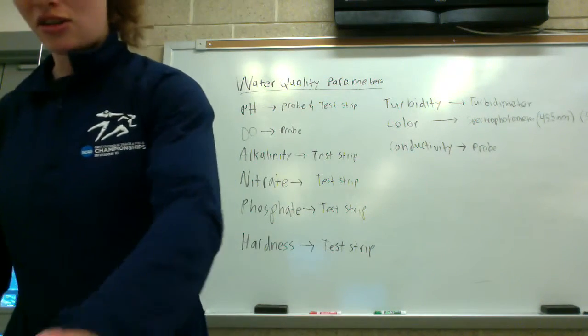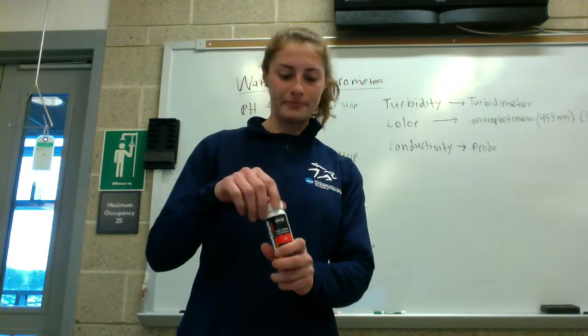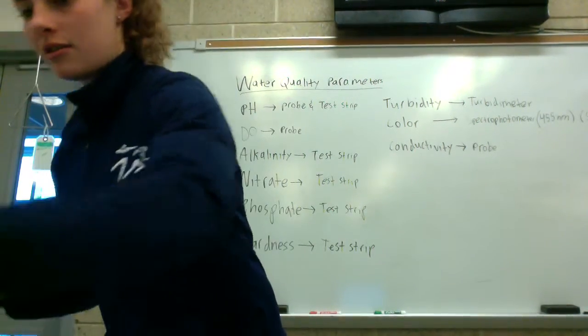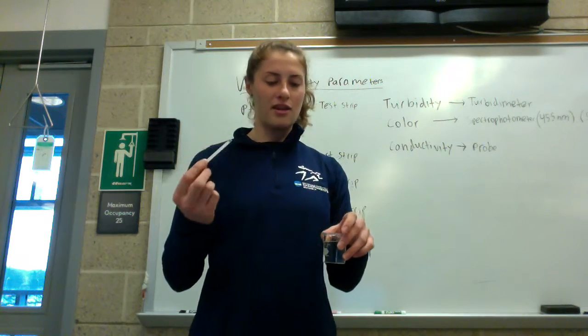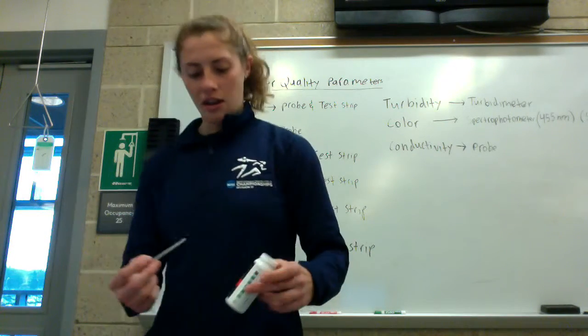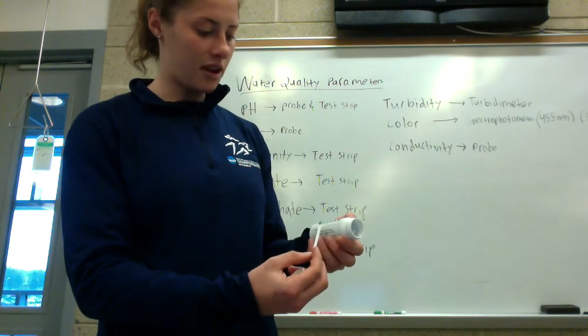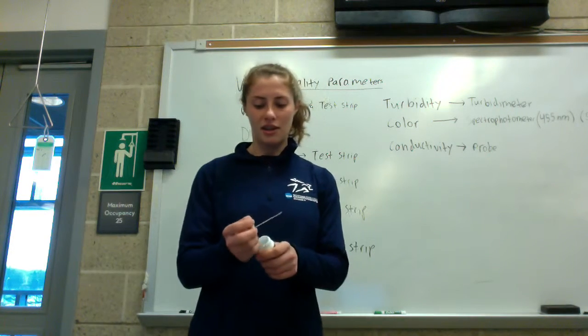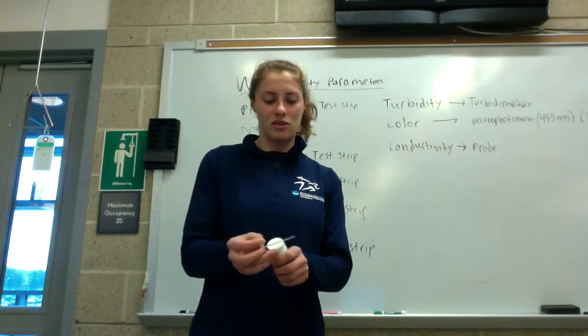To measure pH you can do it two ways. The first way is using test strips. Take a strip and dunk it in your sample, remove it immediately, and wait about 15 seconds for it to change colors. You can use the bottle to compare the color. A pH of around 6, which is less than 7, indicates it's acidic. pH greater than 7 indicates the solution is basic.